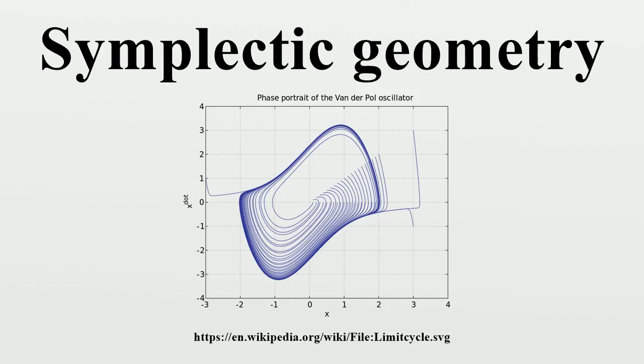Additionally, if M is a closed symplectic manifold, then the second de Rham cohomology group H2 is non-trivial. This implies, for example, that the only n-sphere that admits a symplectic form is the 2-sphere.